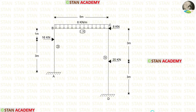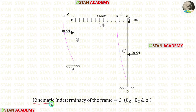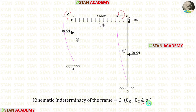This frame is a sway type frame because columns AB and CD have different heights. We assume that the sway occurs towards the left side because column AB is shorter than column CD. The kinematic indeterminacy of the frame is 3: theta B, theta C, and delta.